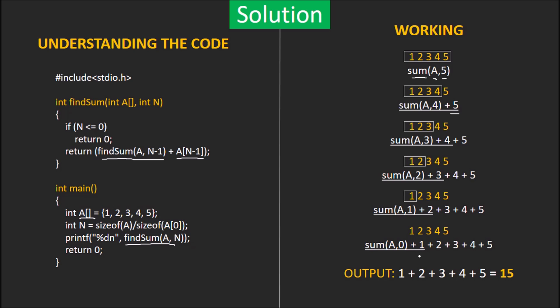So, apparently we now have 1 plus 2 plus 3 plus 4 plus 5 and when findSum is called with n equal to 0, 0 is returned and the code ends.